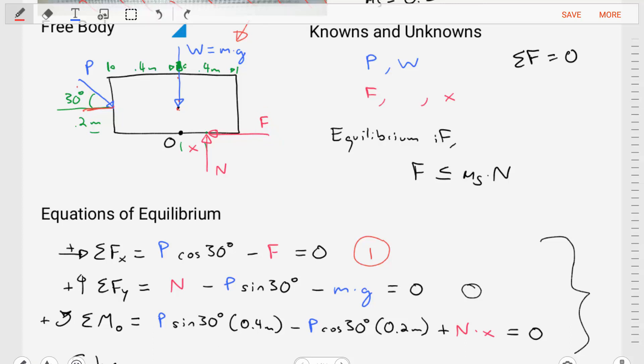We'll then do the sum of the forces in the y direction, equation two. In this equation we're going to take the normal force minus the y component of P, which is minus P times sine of 30 degrees. And then we're also going to subtract our weight, which is mass times gravity. So that gives us our second equation.